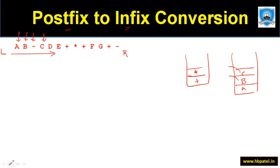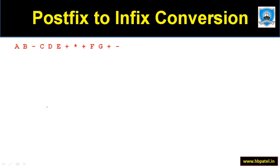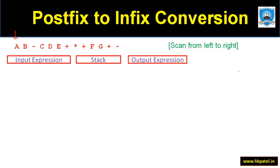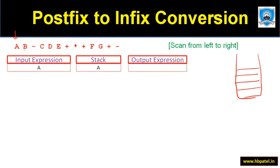Depending on the operator, we will be popping operands. This is how it differs from the previous case. So let us scan from left to right. The very first character is 'a' — the stack is initially empty, and since 'a' is an operand, we push it onto the stack. Next is another operand 'b', so we push that onto the stack as well.